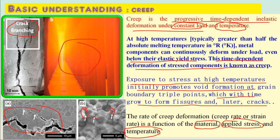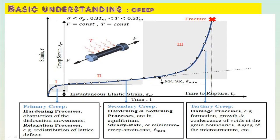These are the three critical factors on which creep is dependent. In summary, creep is the deformation of material under constant load at higher temperatures. Now we will understand the mechanism of creep.